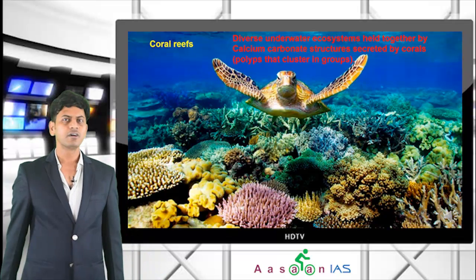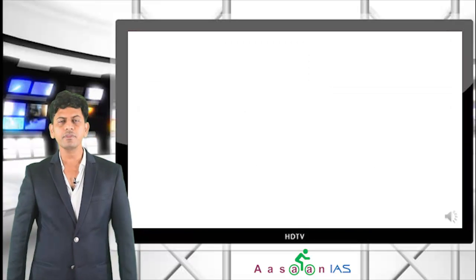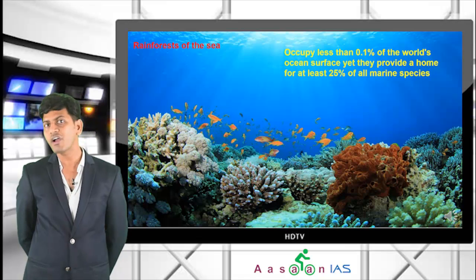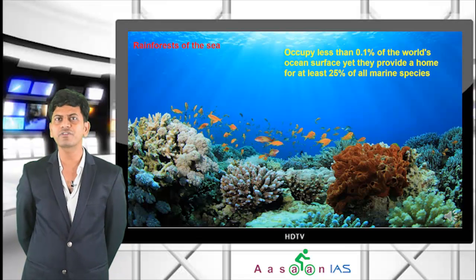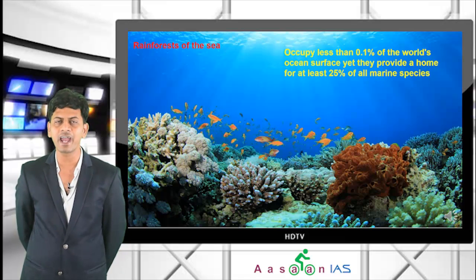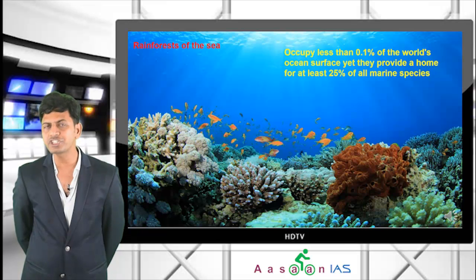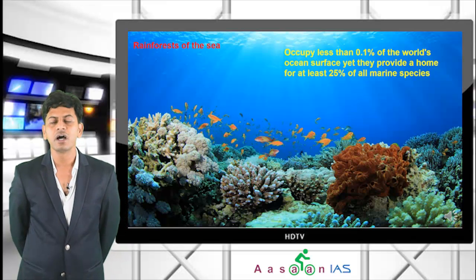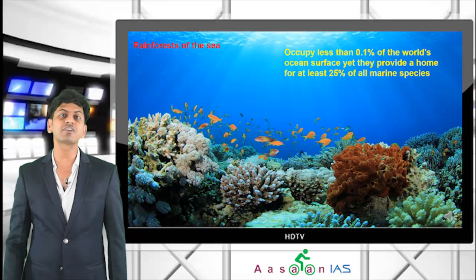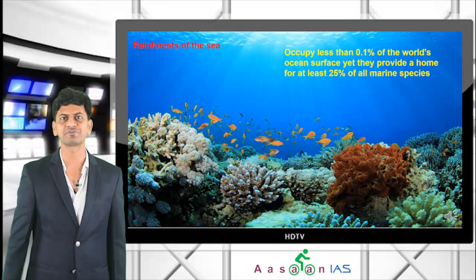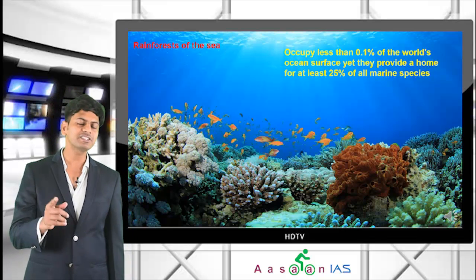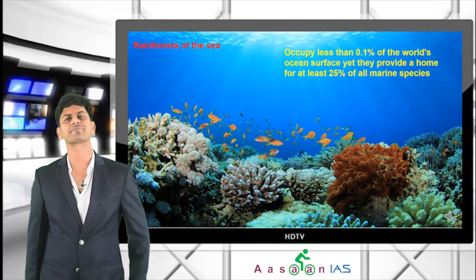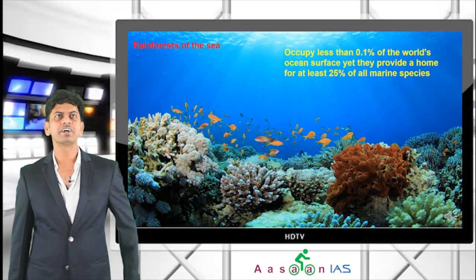Coral reefs are called the rainforests of the sea. Just as rainforests have the highest biomass on land, coral reefs are the most bio-dense in the ocean. They occupy less than 0.1% of the world's ocean surface, yet they provide a home for at least 25% of all marine species — that is why they are called rainforests of the sea.